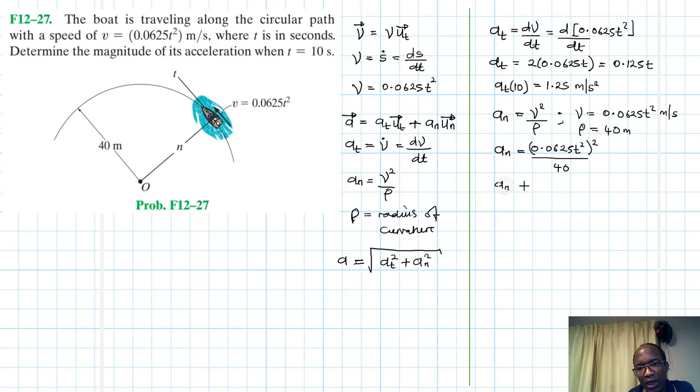We do the same also here for an. At 10 seconds, we plug it in. 0.0625 times t squared, which is 10 squared, and then squared of that again, then divided by 40. So this gives us 0.9765625 meters per second squared.